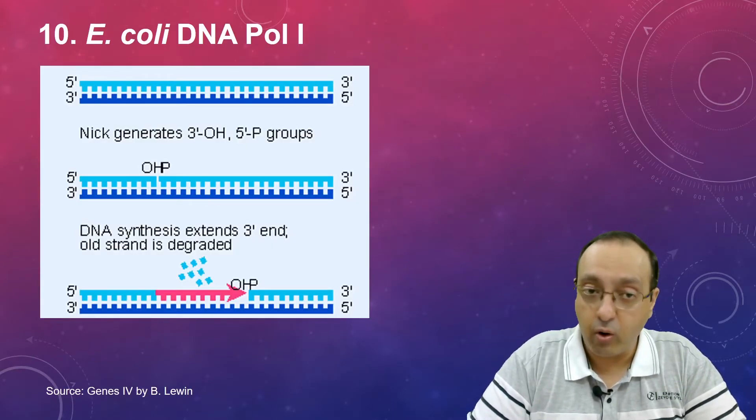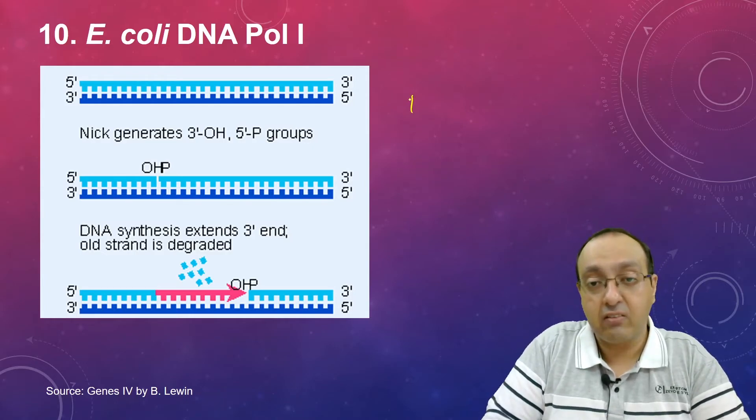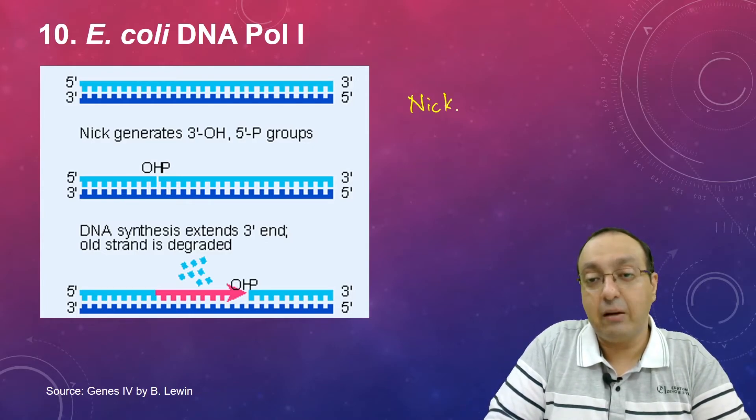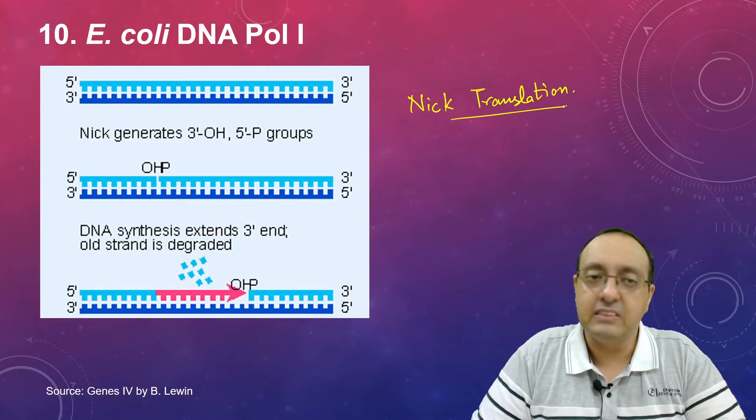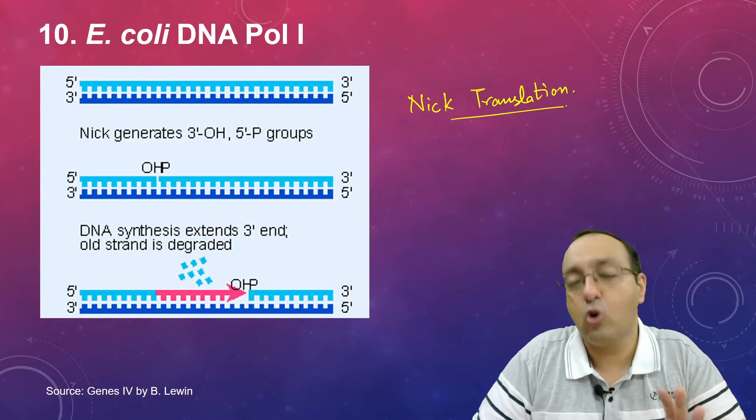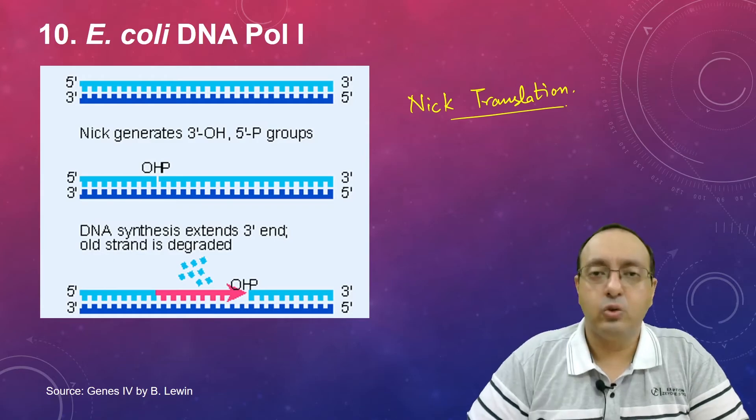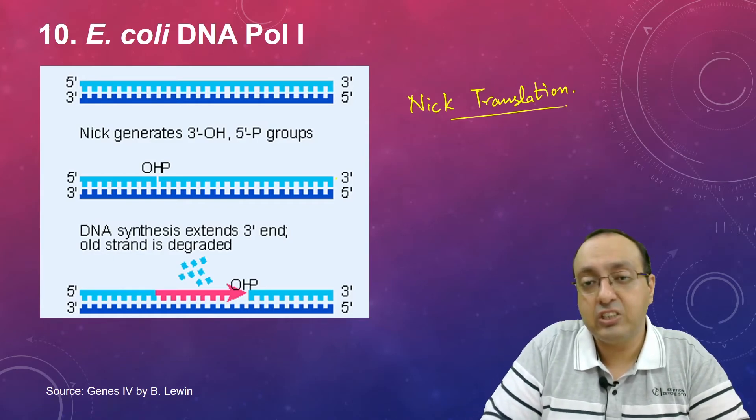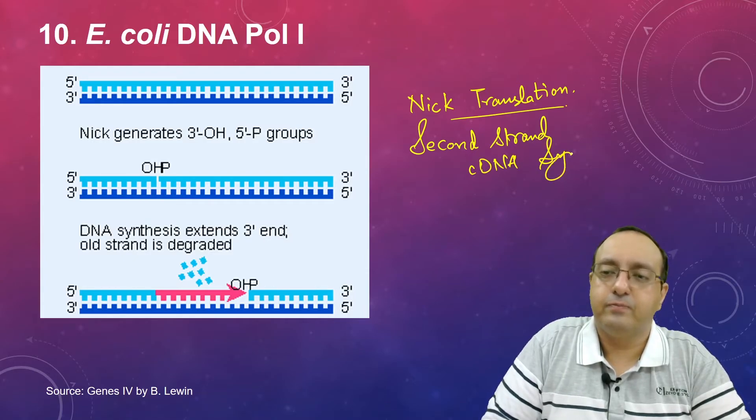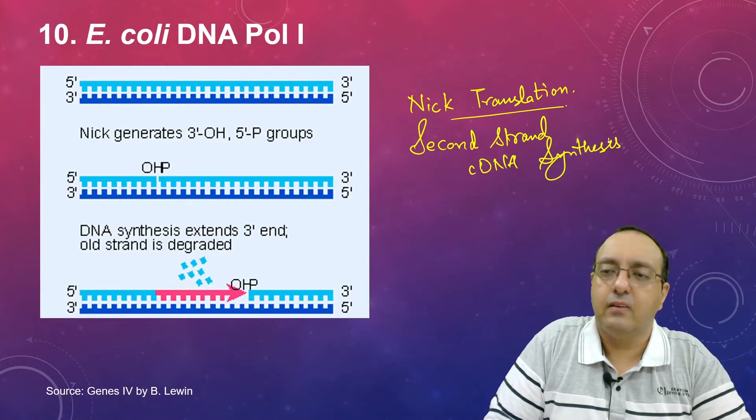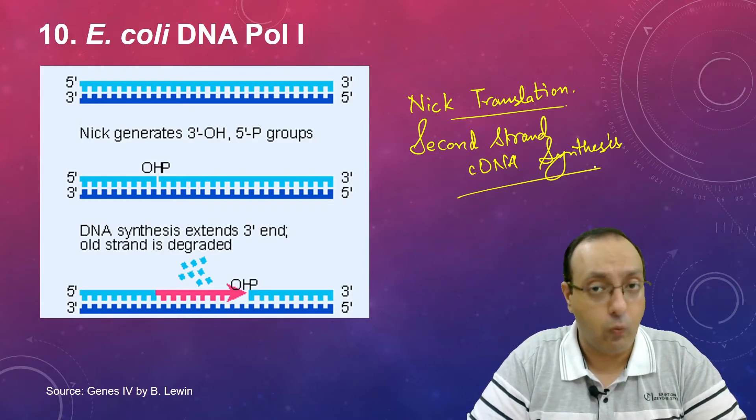Enzyme number 10, E. coli DNA Pol I, hugely important. It is used for nick translation. This is the complete enzyme from which Klenow fragment is the C-terminal part. This is the complete DNA polymerase one, not the main DNA polymerase. In the past it has been used for nick translation and second strand cDNA synthesis.